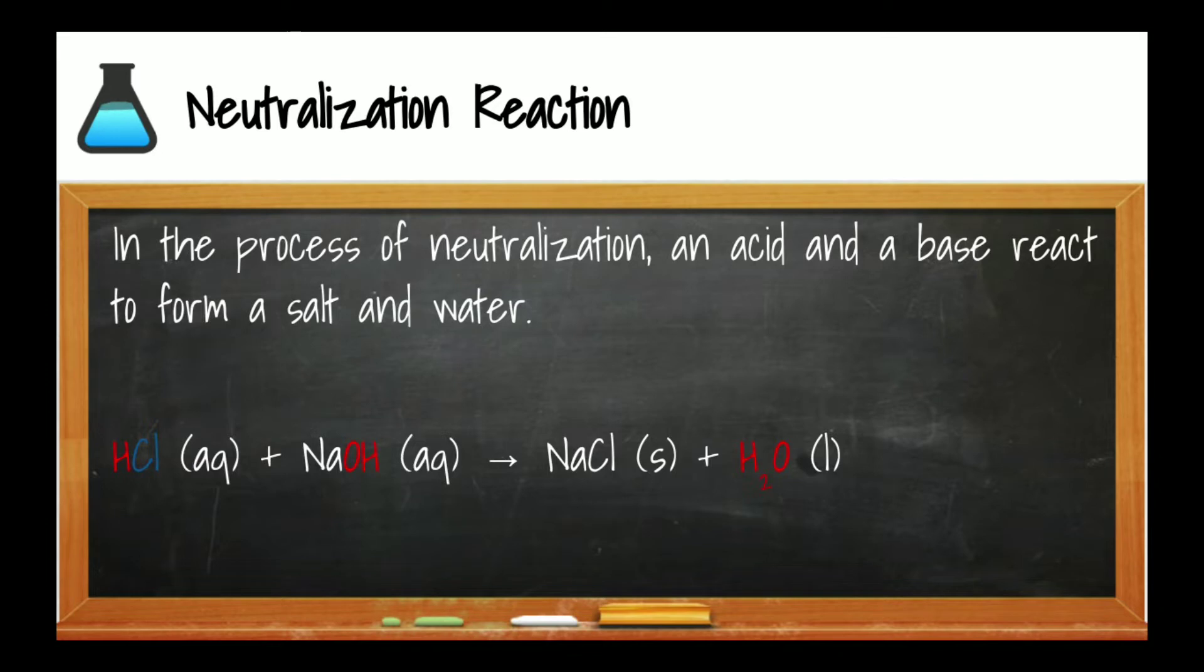So in a double replacement reaction between an acid and a base, we're going to have the hydrogen from the acid combined with the hydroxide from the base to form water. Remember when we were balancing, we sometimes called water HOH. You can still do that here. And then the remaining ions will combine to form the ionic compound.